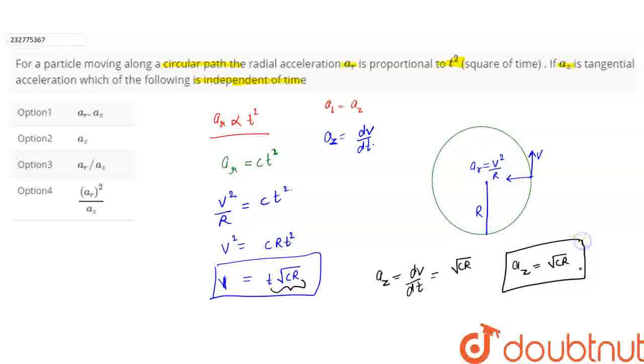Now we will check option number 1: AR into AZ. AR is ct squared which depends on time, and az is a constant value with C and R. So AR is variable and az is constant, so it depends on time. It is an incorrect option.